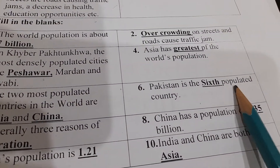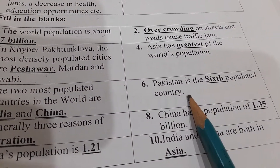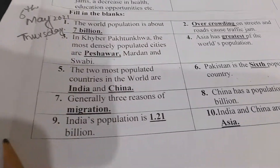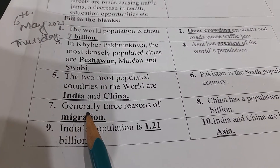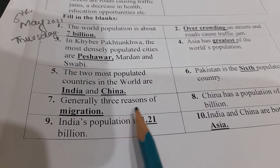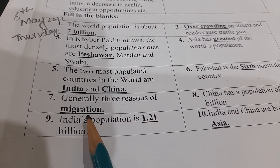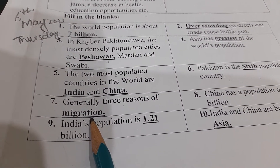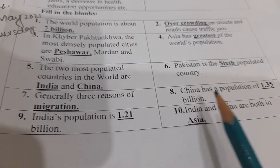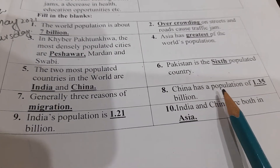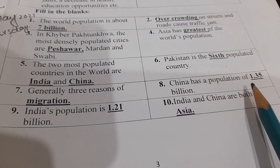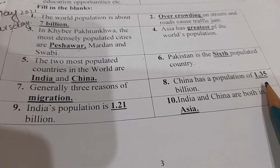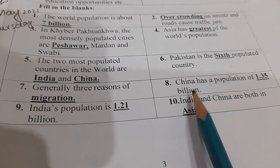Pakistan is the 6th most populated country. Generally there are 3 reasons for migration. China has a population of 1.35 billion.